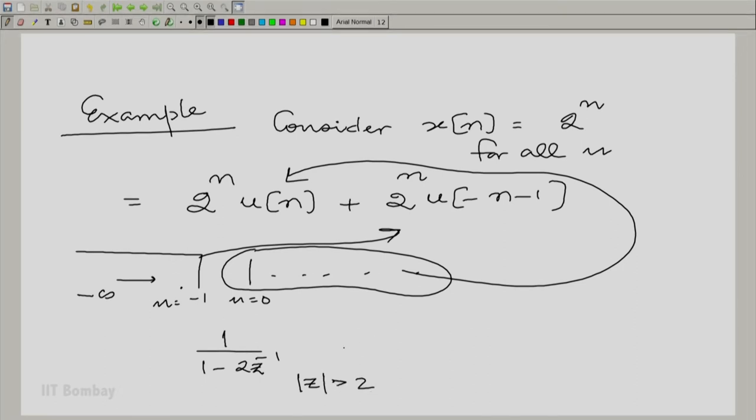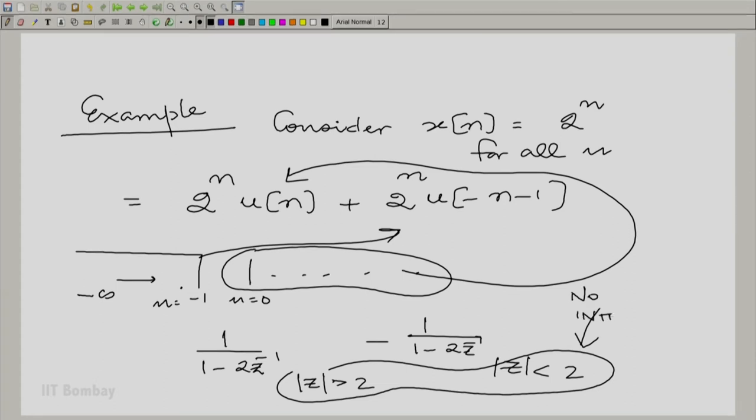And here, I would have 2^n u(-n-1), which would have minus 1 by 1 minus 2 z inverse, but |z| would be less than 2. And if I just blindly add them, I would get a 0. But remember, this intersection is also null.